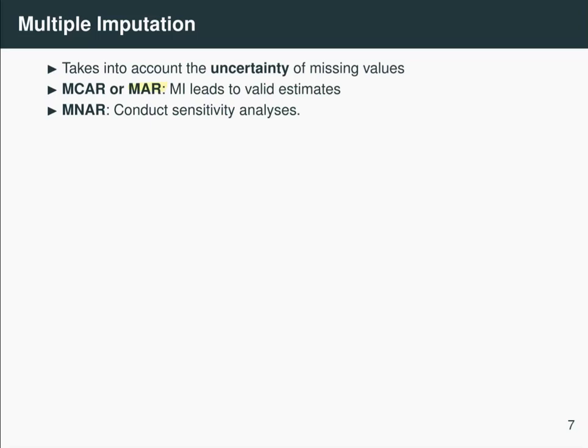For example, you might think that sleep times of animals that are much longer tend to be missing because maybe it's more difficult to measure sleep times when they are very long. In this case, you could take the imputed values that you get under the MAR assumption and increase them by some fraction and compare the results.